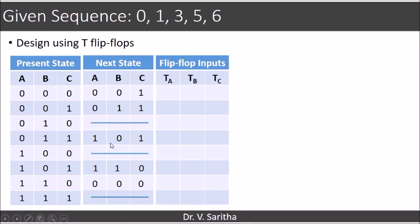So using the present state and next state we can get the flip-flop inputs TA, TB and TC. So if you see to get TA, present state A and A in next state is considered 0, 0. So TA is 0. Similarly 0, 0 is TA is 0. 0, 1 TA is 1. 1, 1 TA is 0.